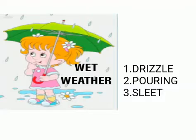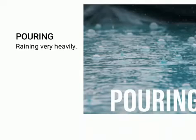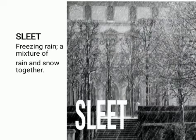As all of you know, wet weather is related to rainy season. Drizzle is very soft and light rain which usually continues for a long time. Pouring — we use this word when it is raining very heavily. Sleet is a freezing rain; it is a mixture of rain and snow together. You can see it in the picture.